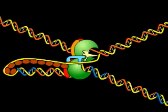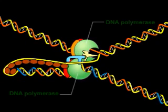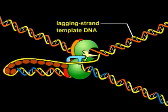In a replication fork, two DNA polymerases collaborate to copy the leading strand template and the lagging strand template DNA.